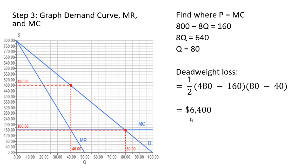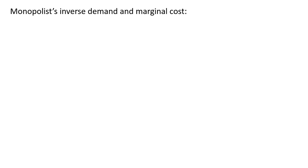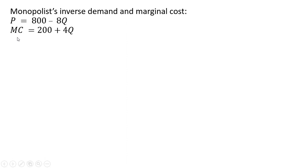Let's do one more example. We're going to use the same inverse demand for the monopolist, but this time change the marginal cost structure. Marginal cost now equals 200 plus 4q.